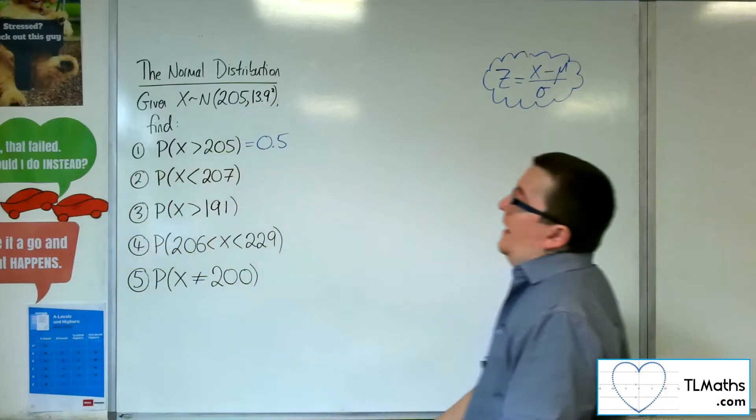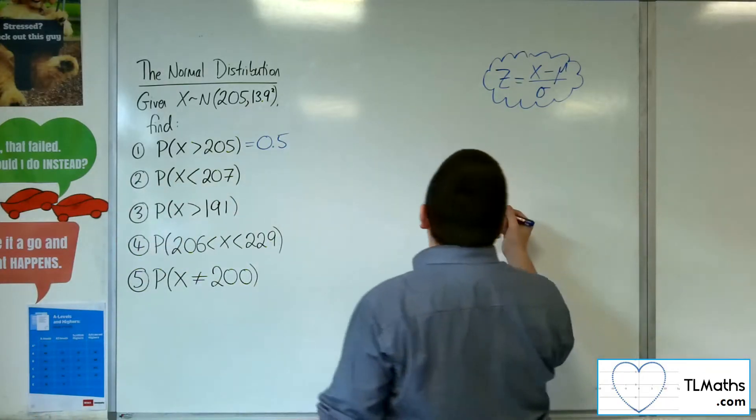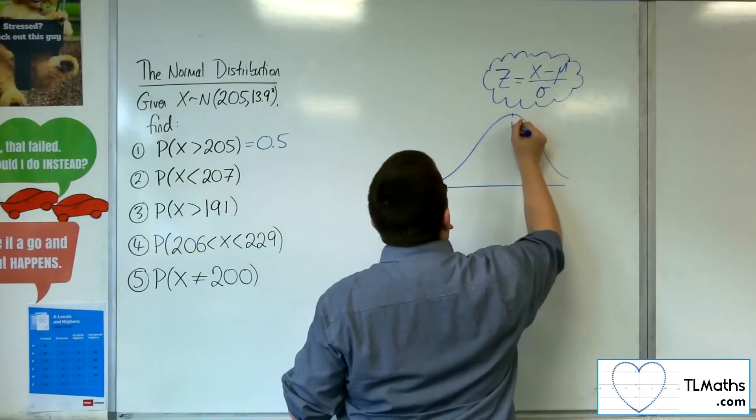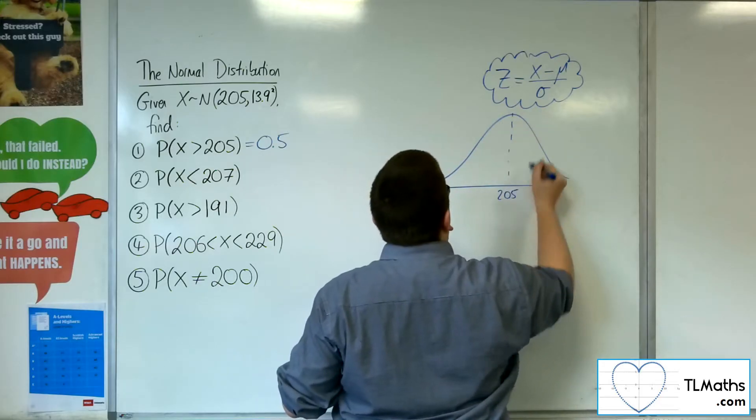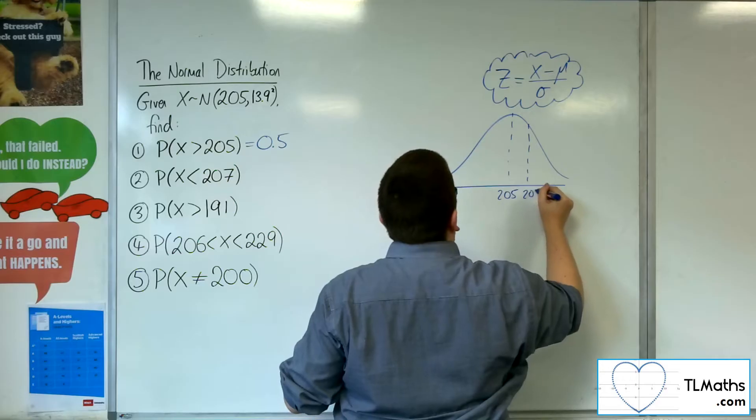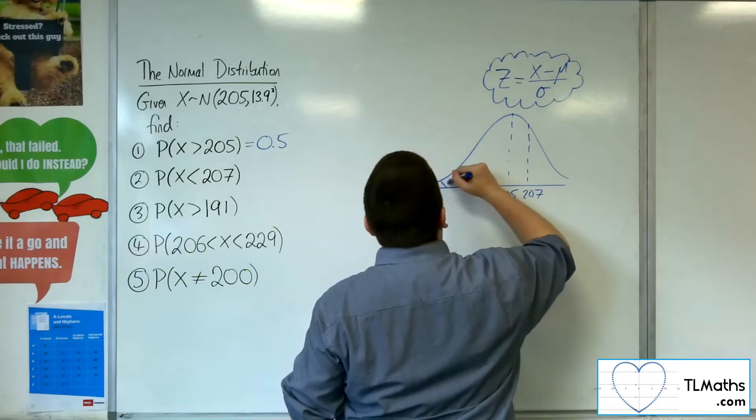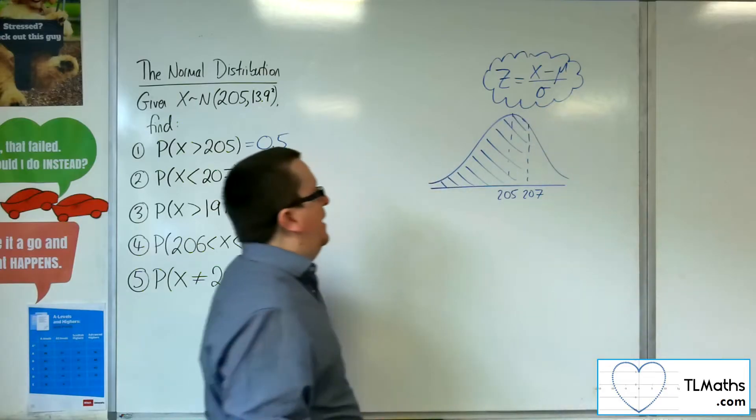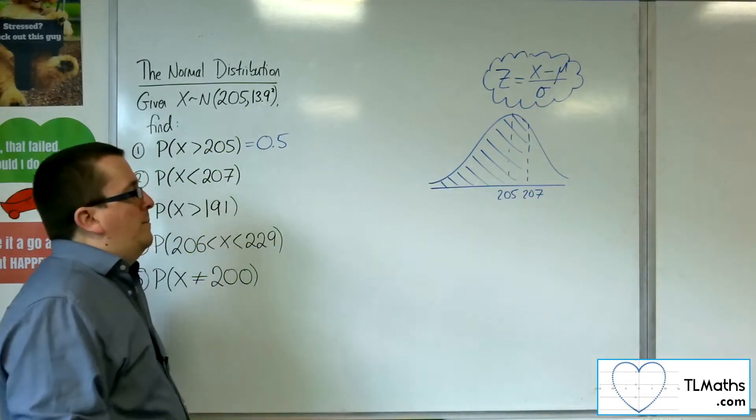So number two, the probability that X is less than 207. Drawing a diagram: 205, 207. We want less than 207, so it's going to be over 50% of the diagram being shaded.